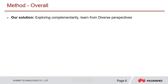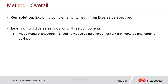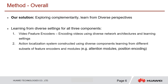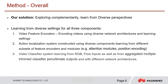Our solution involves exploring complementary aspects and learning from diverse perspectives. For video feature encoding we encode video features using diverse network architectures and learning settings. For the action localization system we use diverse components to learn complementary features using different subsets of feature encoders, including attention modules and position encoding. For the video classifier system we learn from RGB and flow inputs as well as aggregated trimmed classifier penultimate outputs, using different network architectures.